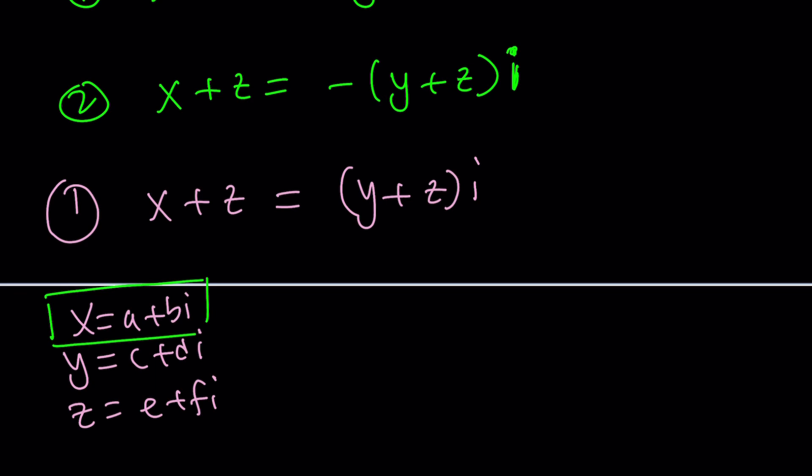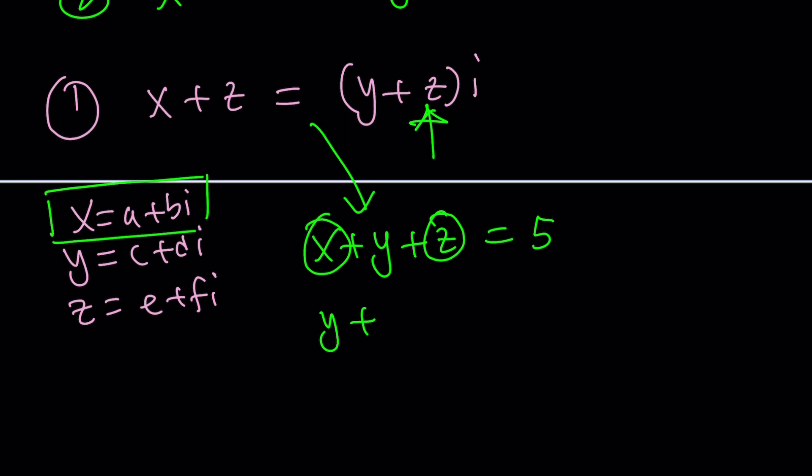We know that x plus y plus z is equal to 5. Great. How does that help? Let's find out. x plus y plus z is 5, and x plus z is this. So we can kind of write this as y plus zi, I mean the quantity, equals 5. That's awesome because now we got rid of x. We have two variables, and we can still use these. Let's use them.